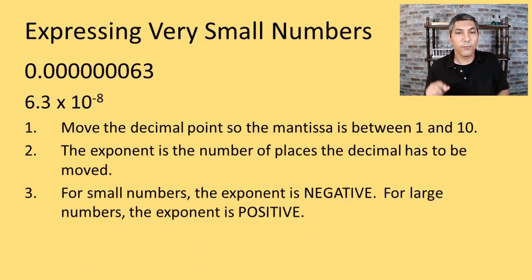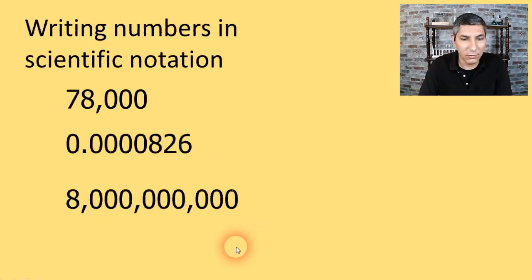Sometimes students wonder, is it a positive exponent or is it a negative exponent? Well, the rule that I tell students is for very small numbers, the exponent is negative. For very large numbers, the exponent is positive. Sometimes people say, if you move it to the right, it's going to be negative. If you move it to the left, it's positive. The problem is when you take a scientific notation number and move it back to a regular number, now all of a sudden it's the opposite. So I just tell students if it's a big number, positive exponent. If it's a little number, negative exponent. So that's how you write a number in scientific notation.